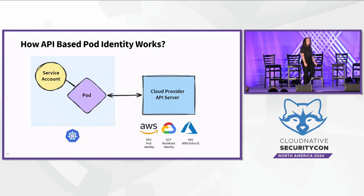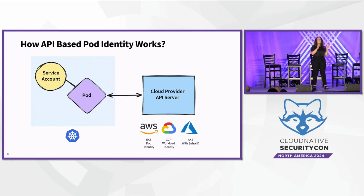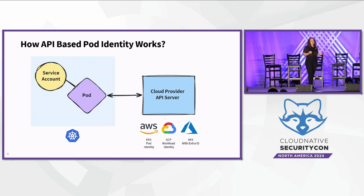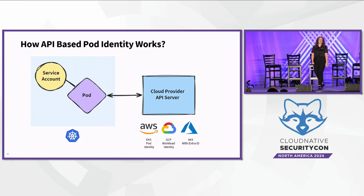Here's a short diagram explaining how API-based pod identity works. A pod is connected to a service account that generates a token. Whenever the pod needs to access a third-party service on the cloud provider side, it sends the token to the cloud provider's API server for validation. After it's validated, the cloud provider sends back credentials to the pod. These credentials are temporary and expire after a certain amount of time depending on the cloud vendor. Each cloud vendor has a different implementation for this feature.